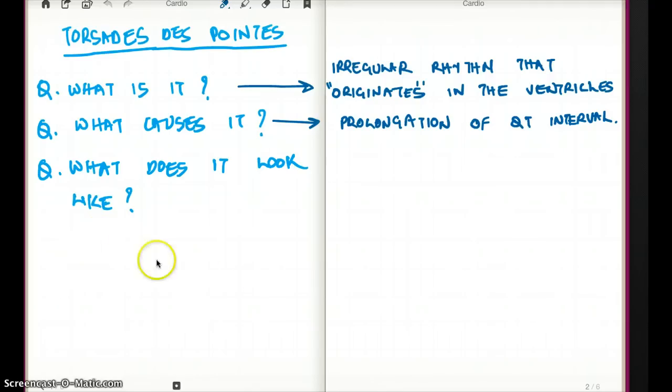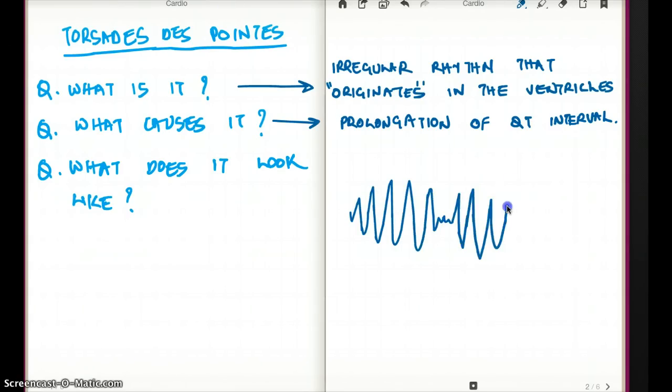Now, coming back to my last question, what does Torsades look like? Torsades looks like something like this. You can look it up on the internet. So pretty much, it looks like,